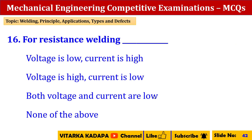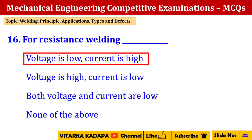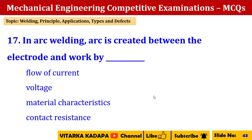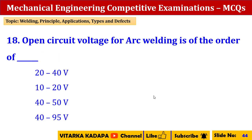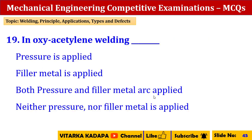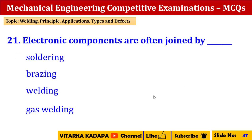For resistance welding, voltage is low and current is high. In arc welding, the arc is created between the electrode and work by contact resistance. Open circuit voltage of arc welding is of the order of 40 to 95 volts. In oxyacetylene welding, filler metal is applied. Electronic components are often joined by soldering.